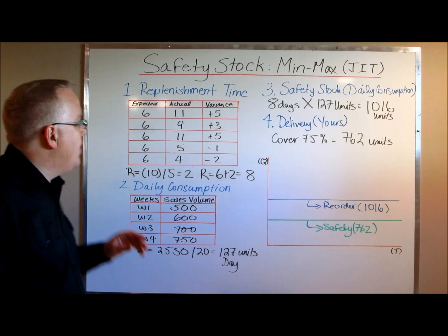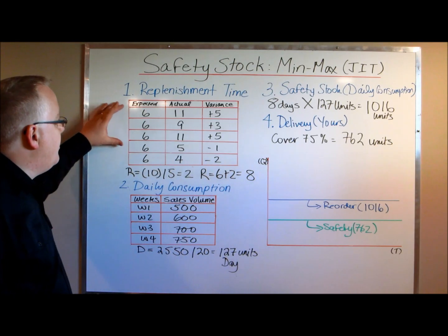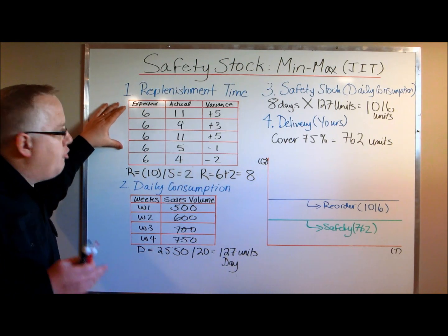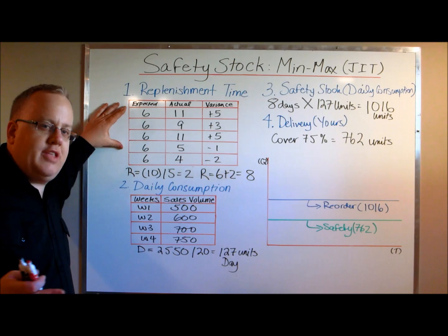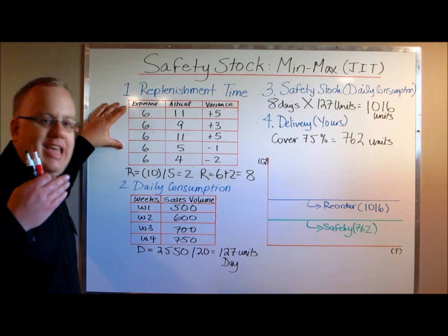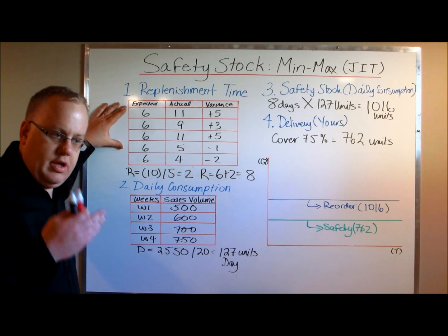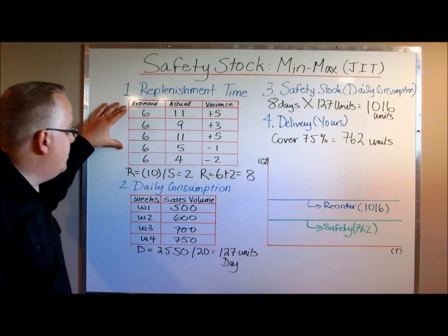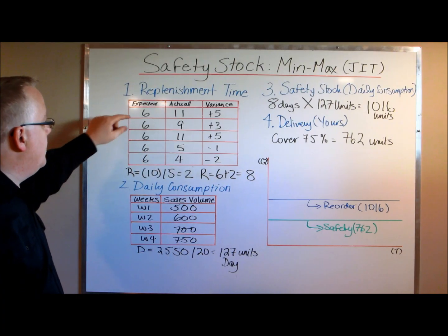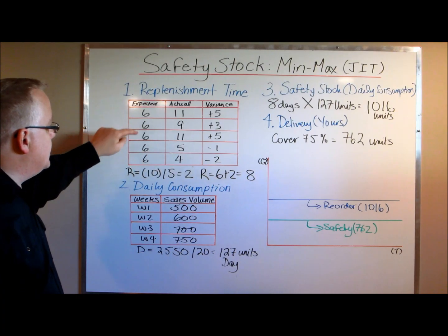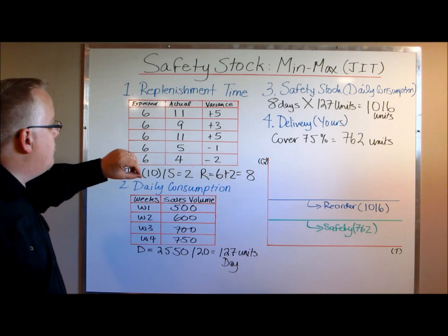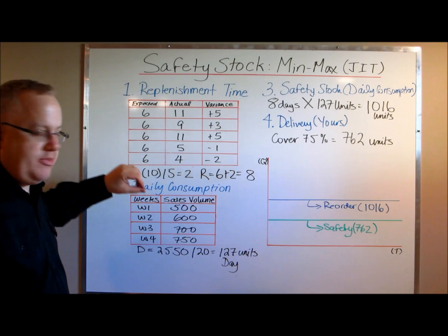So it's not just delivery time. In this case, the company has determined that its replenishment time should take six days. They're going to track the actual number of days in terms of replenishment time. We've got five shipments here, and the expected replenishment time for each is six days.